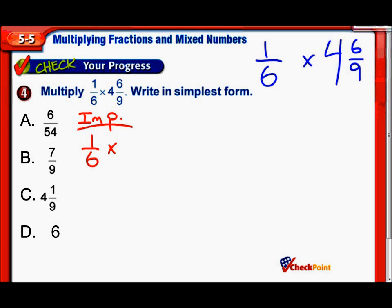Here we go. So, we're going to keep that 1/6. But now, we're going to turn 4 and 6/9 into an improper fraction. So, let's see. Do you remember how to do that? You do 9 times 4. And 9 times 4 is 9, 18, 27, 36. And then 36 plus 6. Well, 36 plus 6 would be 42. So, that would be 42 over the original denominator. So, you keep that 9. 42 over 9.